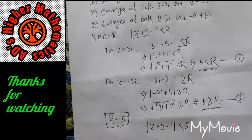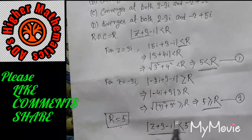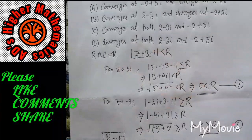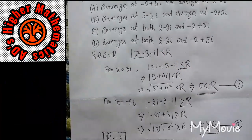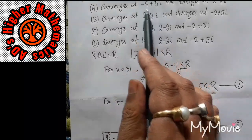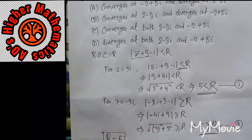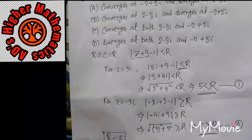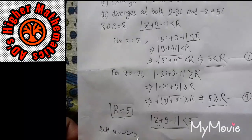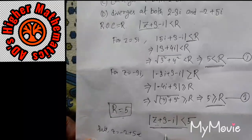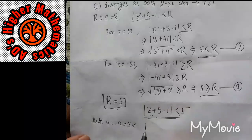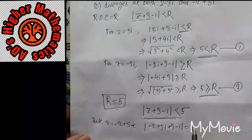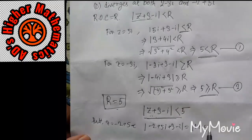Now we check the options. Option A says the series converges at minus 2 plus 5i. If the series converges at Z equals minus 2 plus 5i, it must satisfy the inequality. Putting Z equals minus 2 plus 5i: |−2 + 5i + 3 − i| = |1 + 4i| = root of (1 + 16) = root of 17.